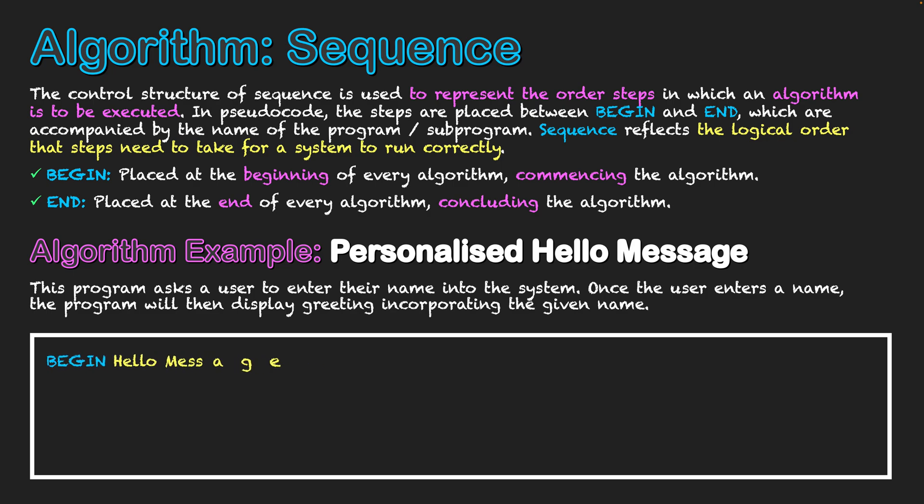Going with sequence, the first thing we write out is BEGIN. The keyword BEGIN is used with the name of my program—I've named my program Hello Message—and this begins the algorithm for Hello Message.